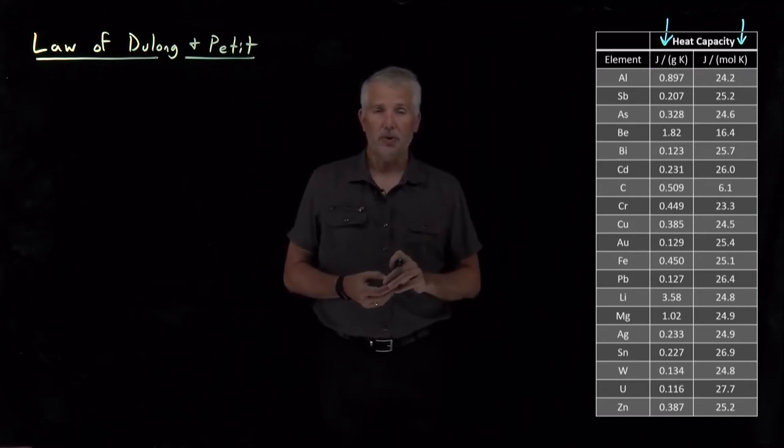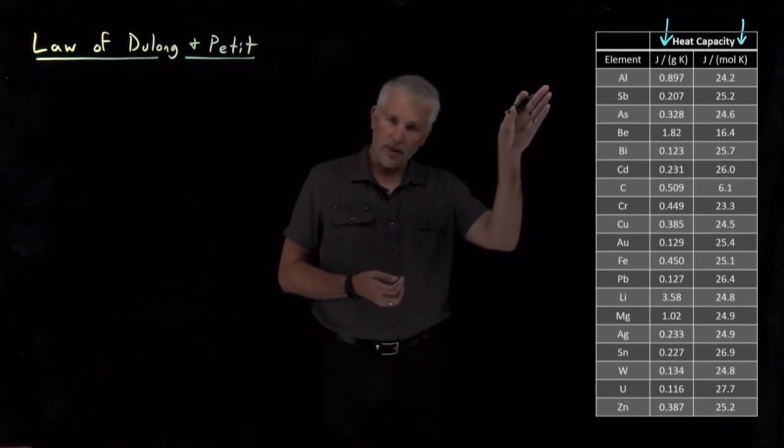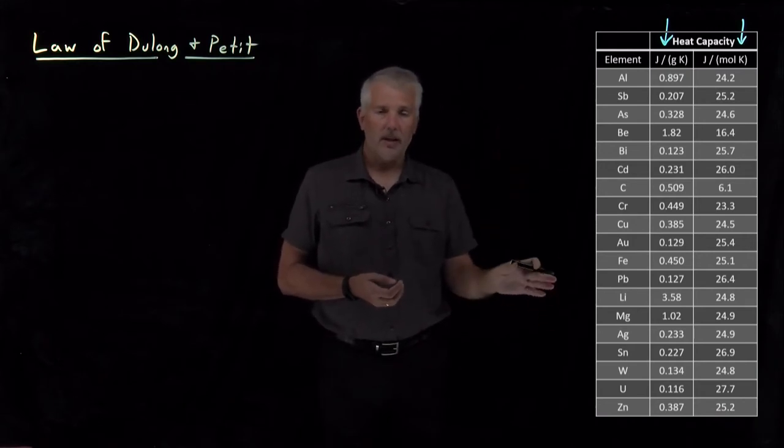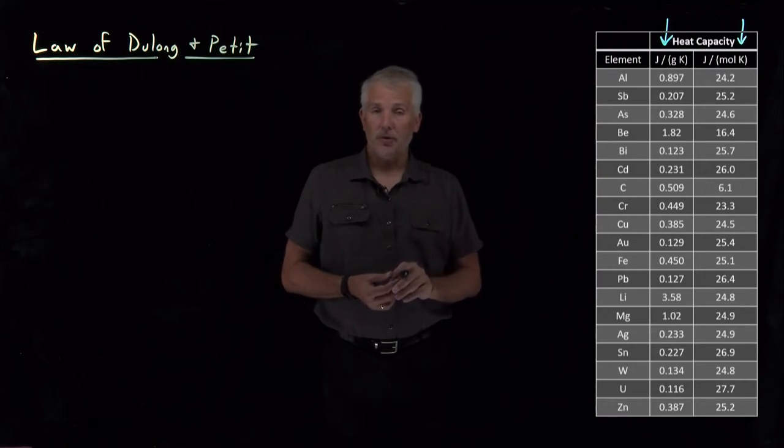So why is it true that the heat capacity of all these metals, all these very different, some are metals, in fact some are not metals, the heat capacity of all these substances seems to be 25 joules per mole Kelvin?